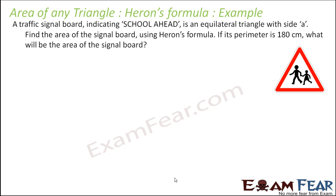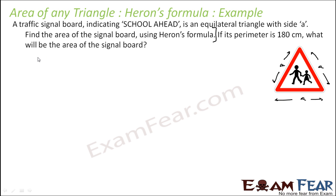A traffic signal board indicating school ahead is an equilateral triangle with side a. Find the area of the signal board using Heron's formula. To find the area, first we need to find S, which is the sum of all sides divided by 2, that is 3a / 2.